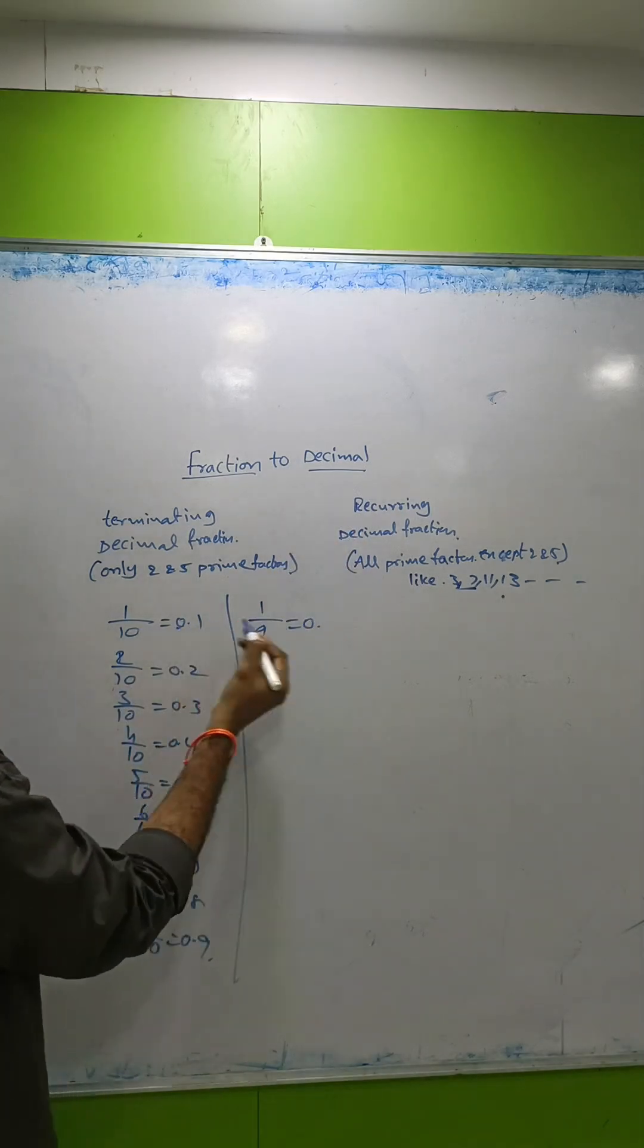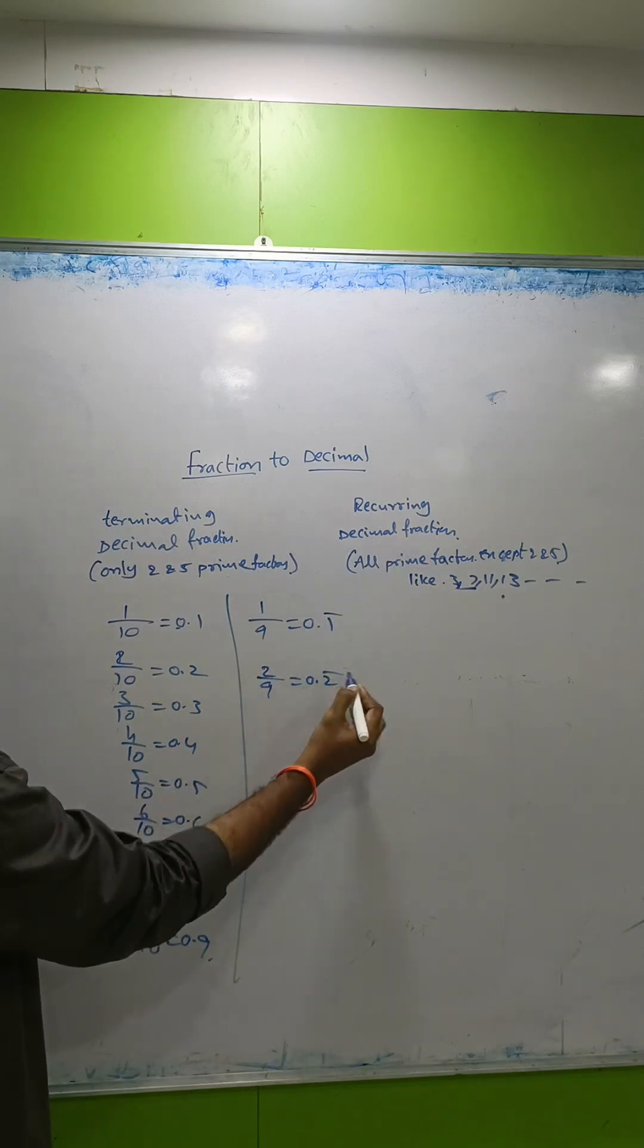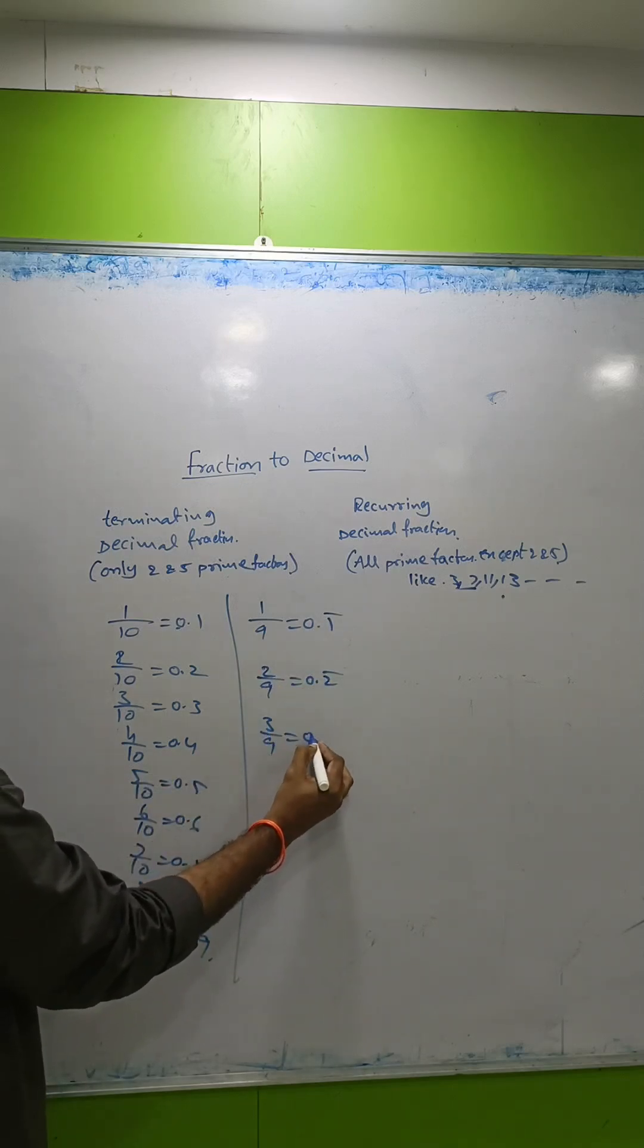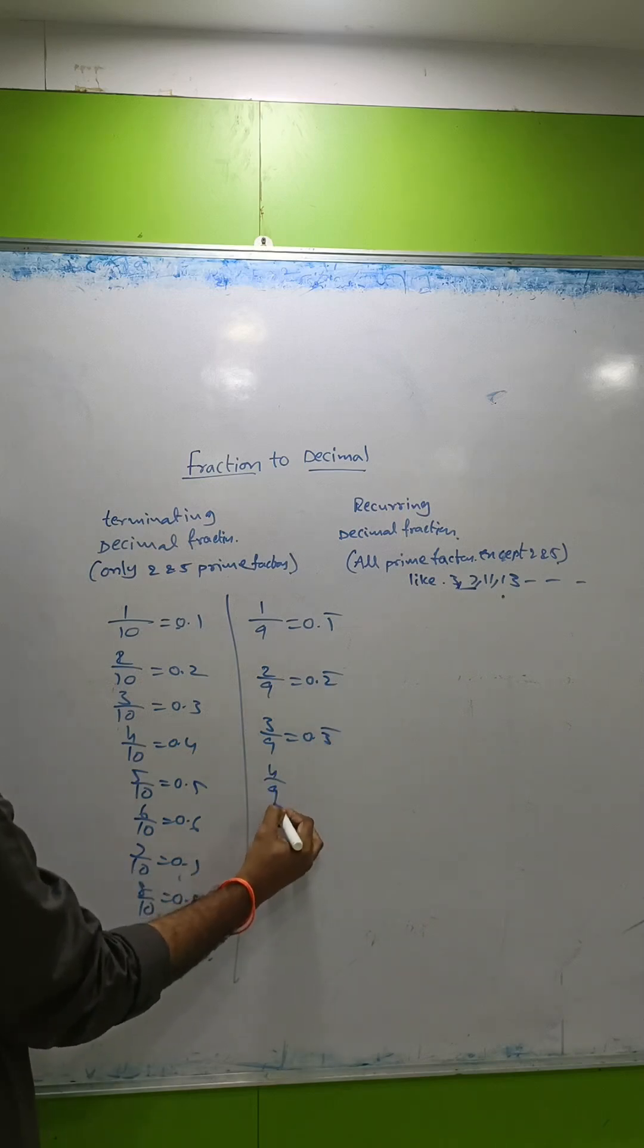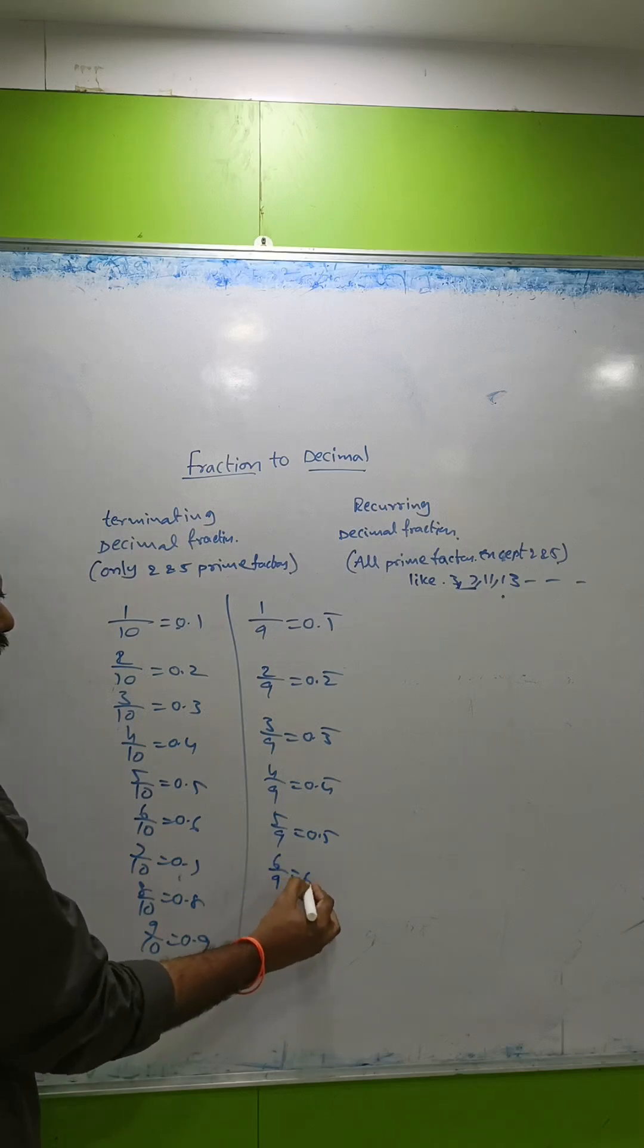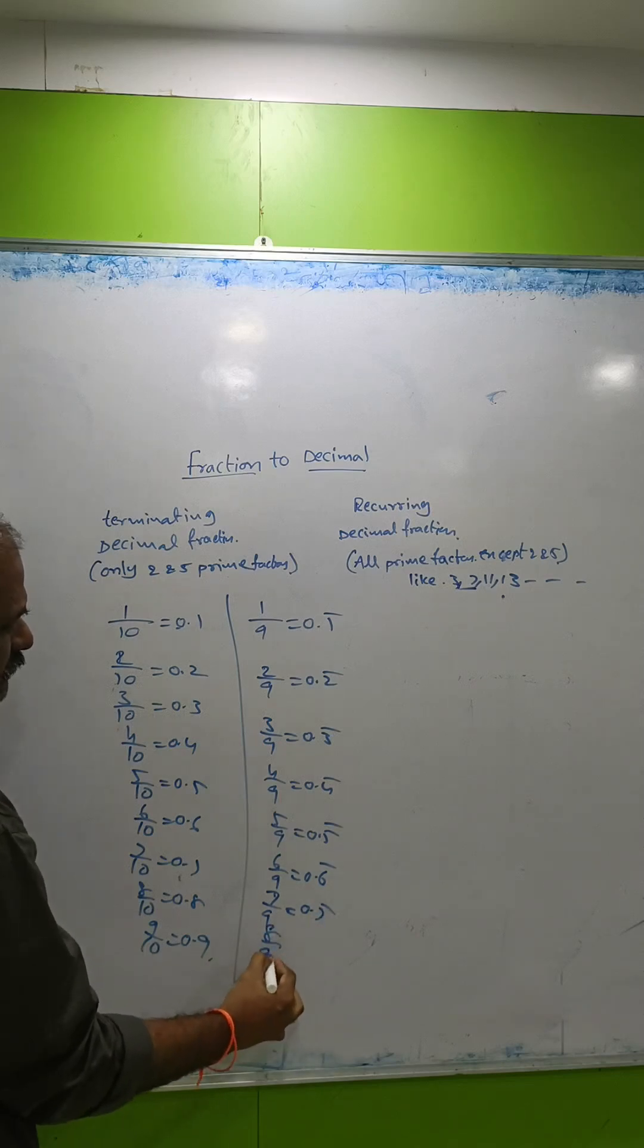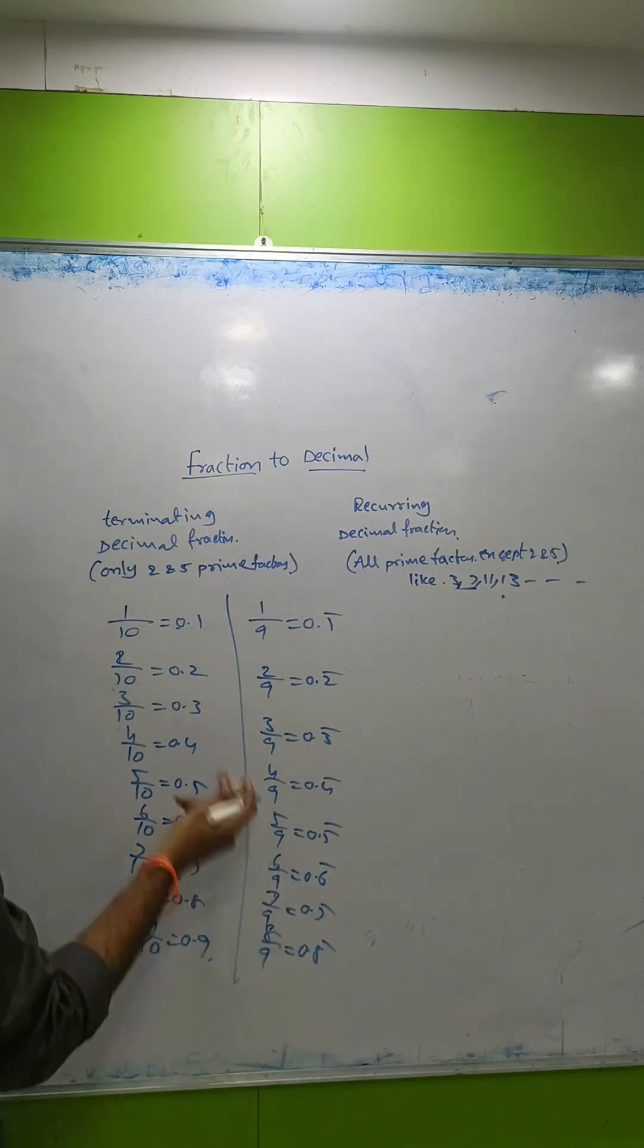Recurring decimals: 1/9 = 0.1 bar, 2/9 = 0.2 bar, 3/9 = 0.3 bar, 4/9 = 0.4 bar, 5/9 = 0.5 bar, 6/9 = 0.6 bar, 7/9 = 0.7 bar, 8/9 = 0.8 bar. This shows a similarity pattern.